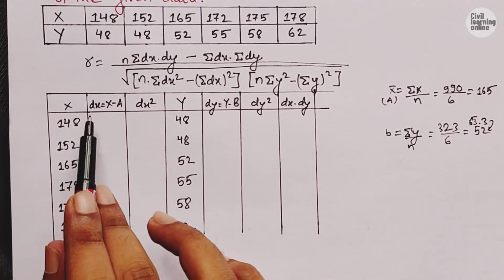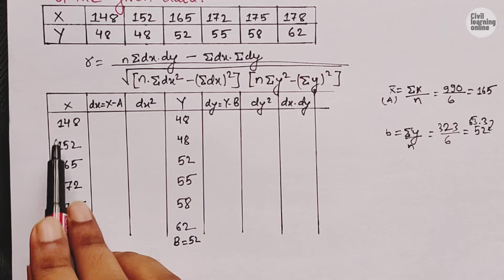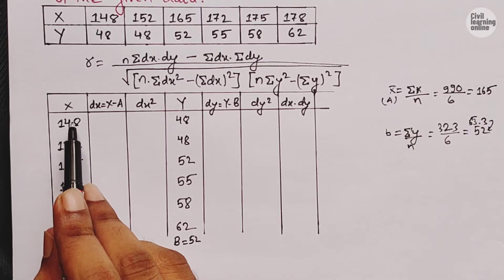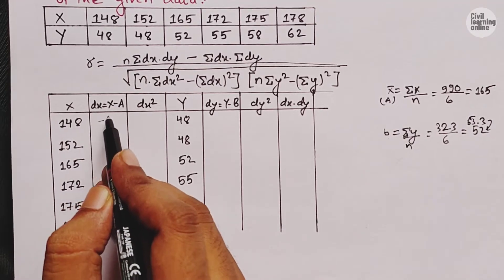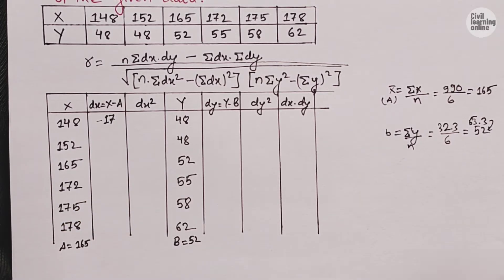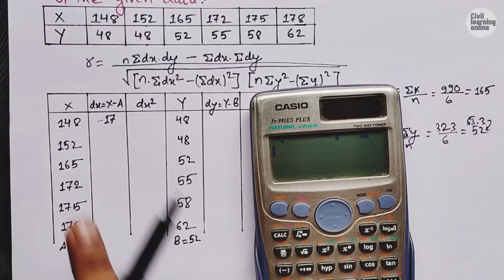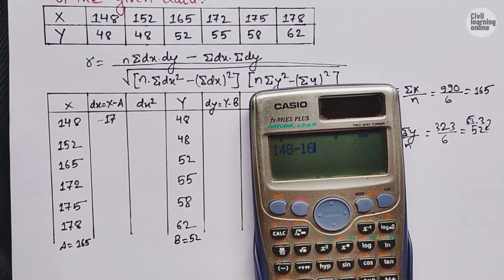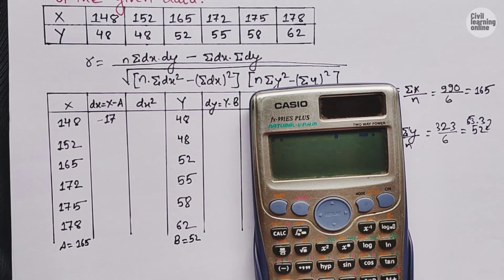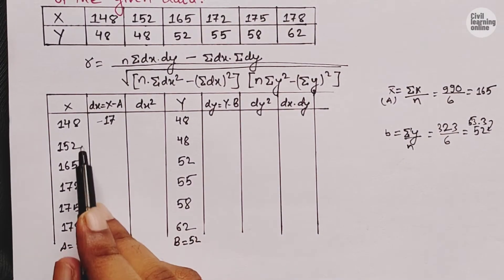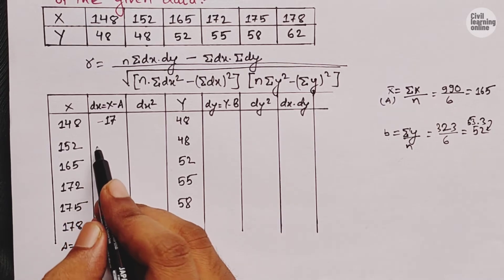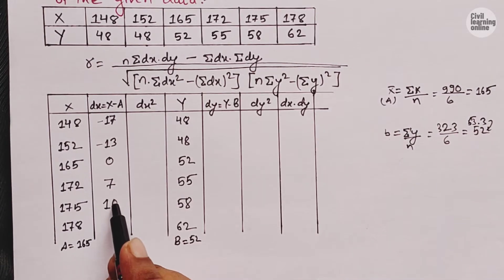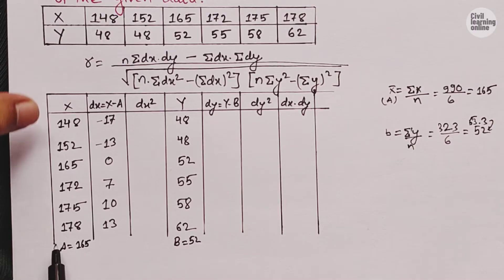So the assumed mean a equals 165 and b equals 52. Now we calculate dx, where dx equals x minus a. So for the first value: 148 minus 165 gives minus 17. Similarly, subtracting 165 from each x value gives: minus 17, minus 13, 0, 7, 10, and 13.